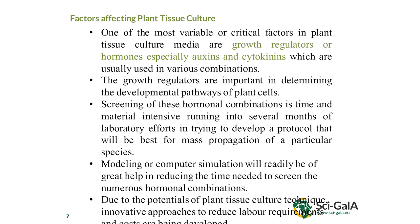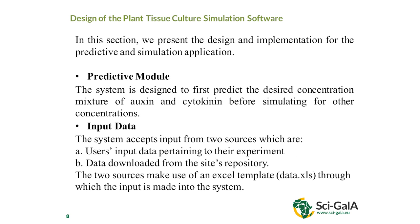We have the predictive model module. This module will first of all predict the desired concentration of auxin and cytokinin. Like I said before, those hormones used in this experiment are the auxin and cytokinin. From the results we got from the lab, we look at the different combinations that we have and use them to predict the yield before we go ahead to simulate.